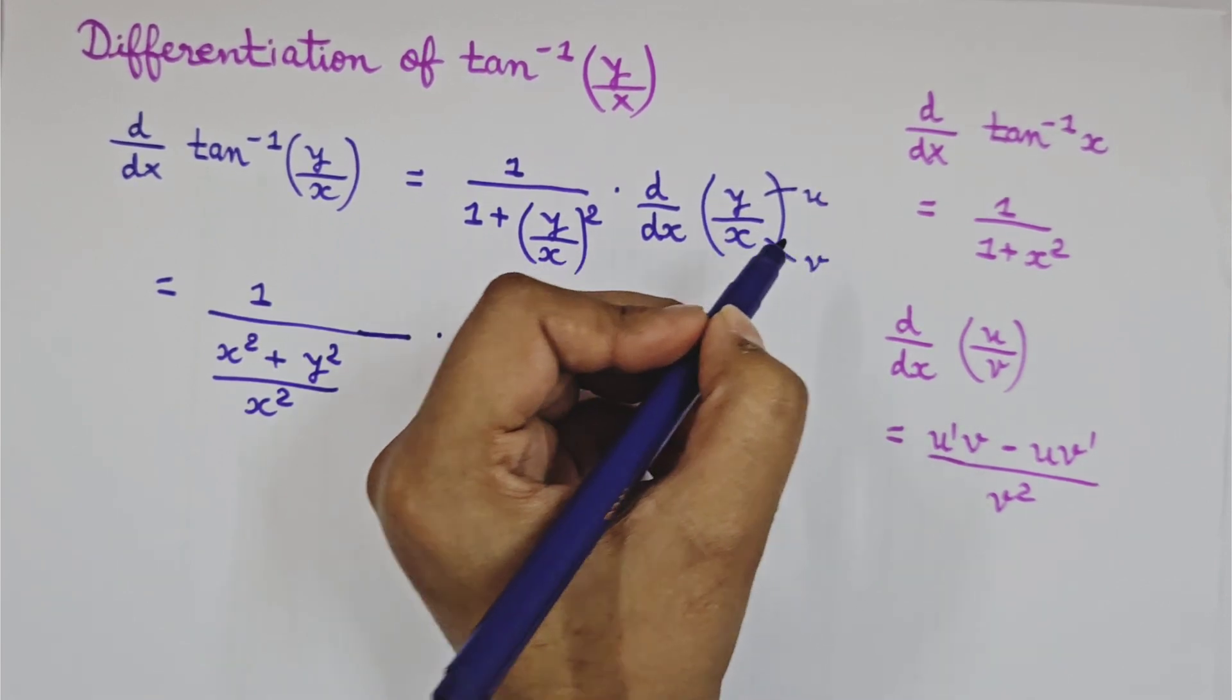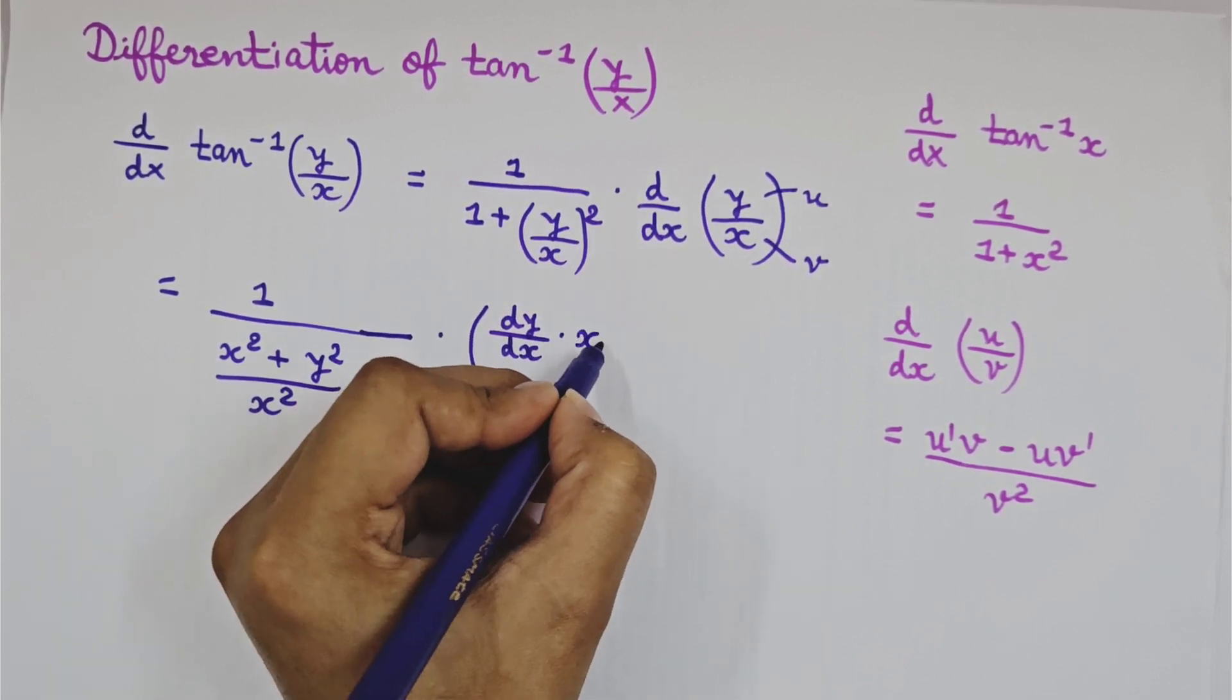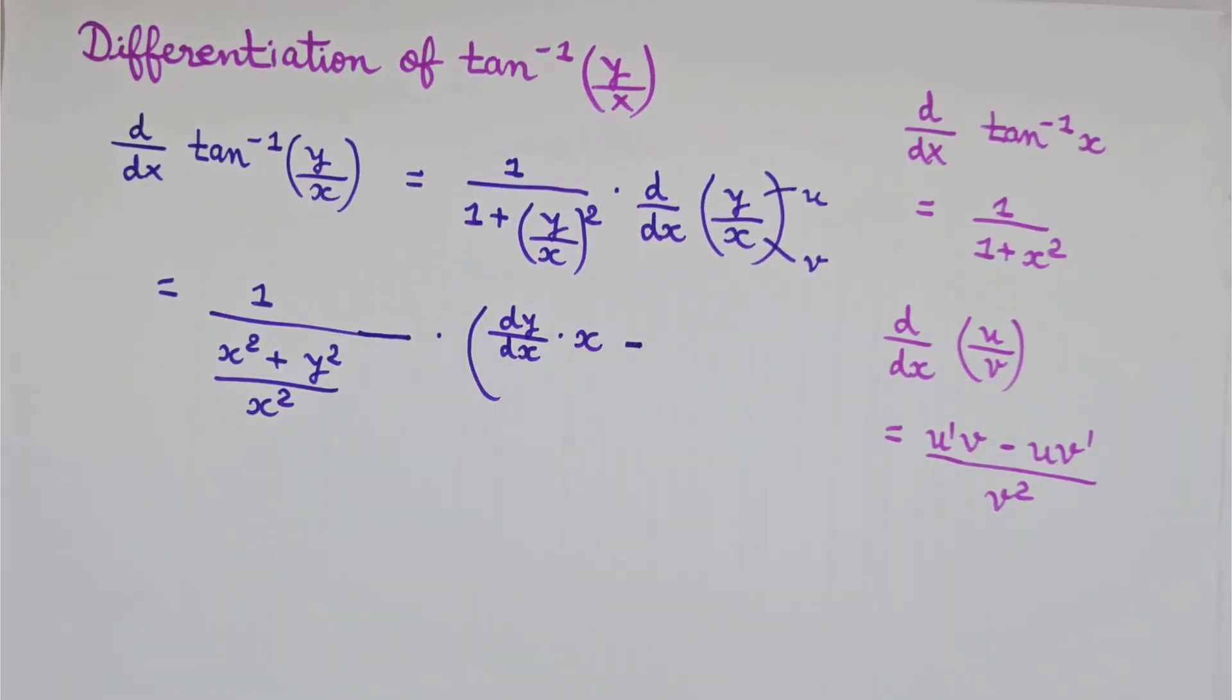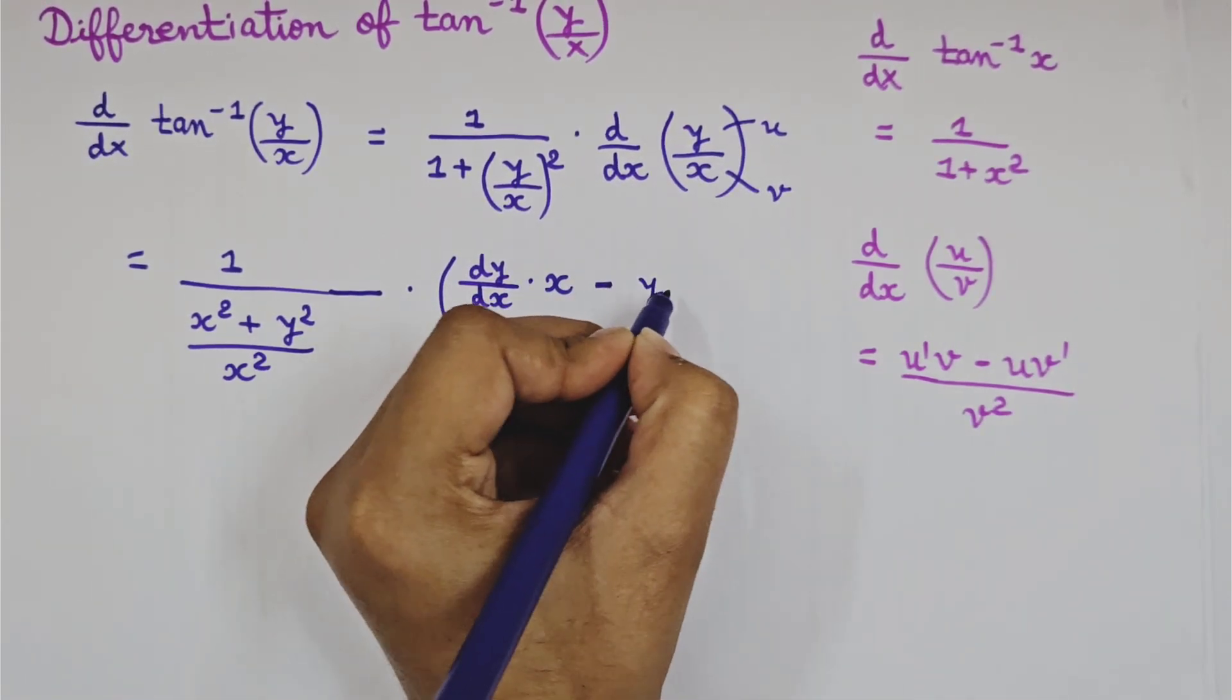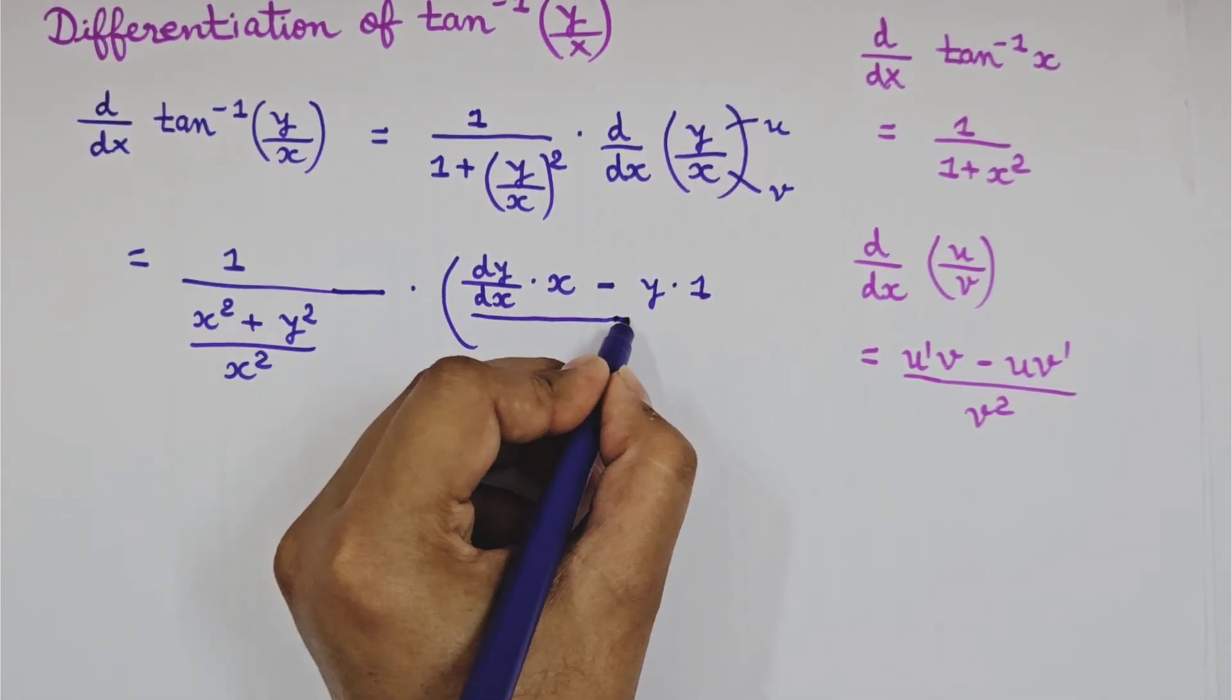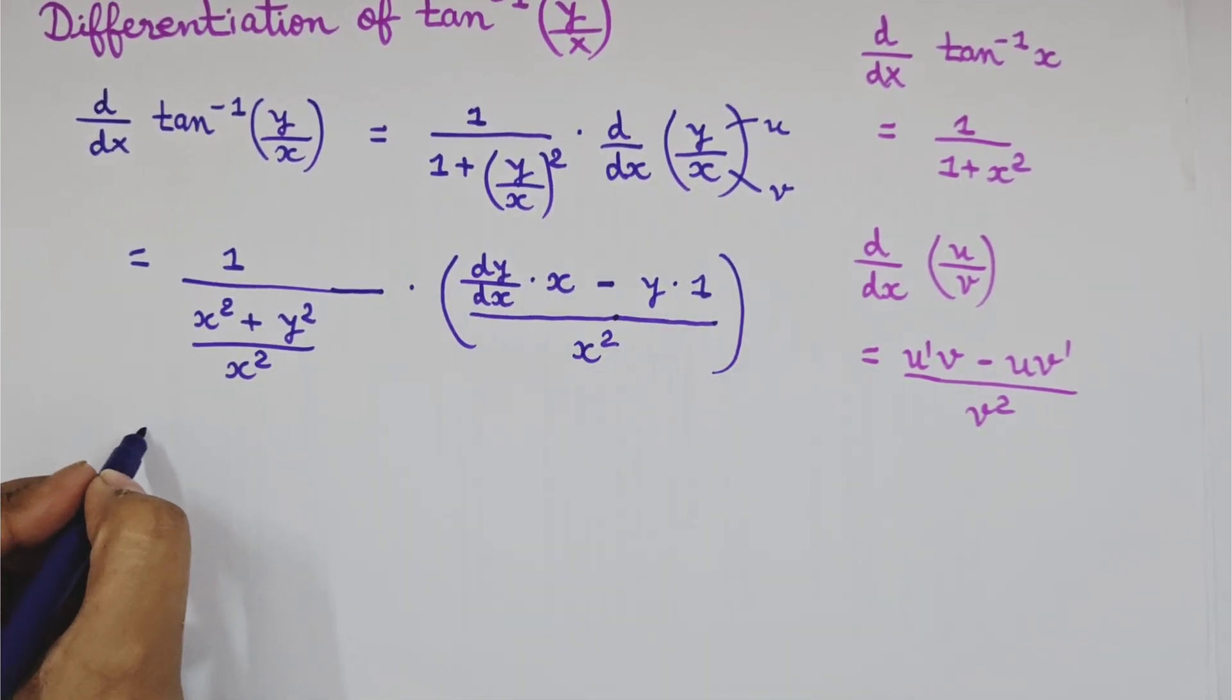Here we have y is u and x will be my v. So if we write this, u dash v, u dash divided by dx, v is my x minus u v dash. u is my y and v is my x. Now v dash, I mean differentiation of x with respect to x. If I do it, it will be 1 divided by v square. v is my x, so it will be x square.